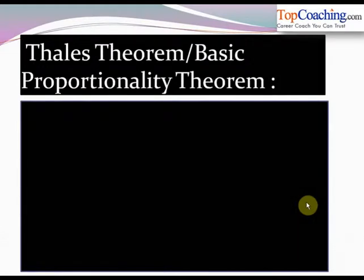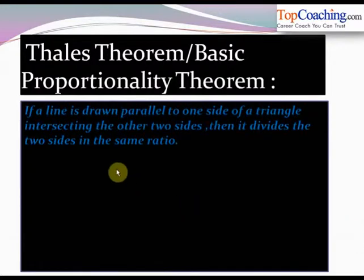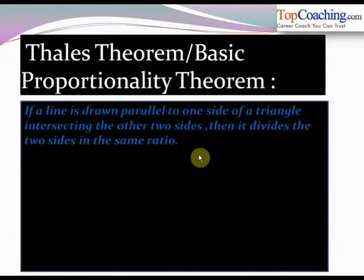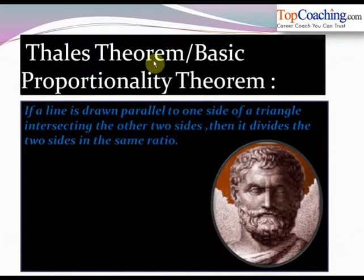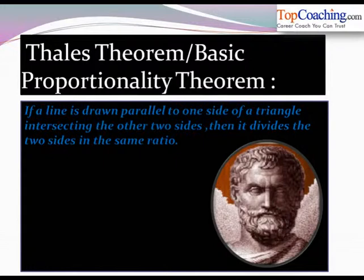Now let's study one of the most important theorems in similarity of triangles, known as the Thales theorem or the Basic Proportionality Theorem. It states that if a line is drawn parallel to one side of a triangle intersecting the other two sides, then it divides the two sides in the same ratio. This theorem was given by Thales, which is why it is also called the Thales theorem.